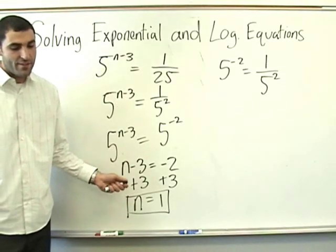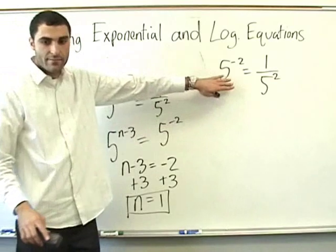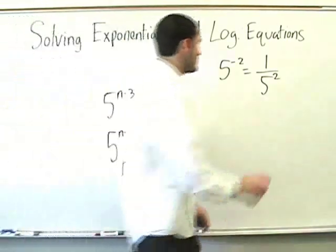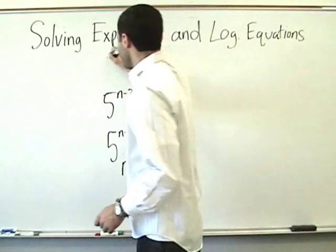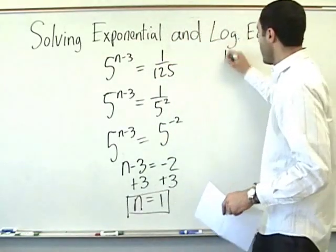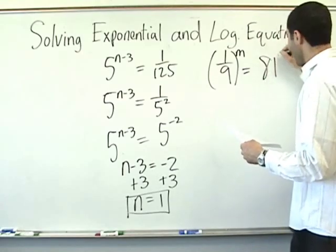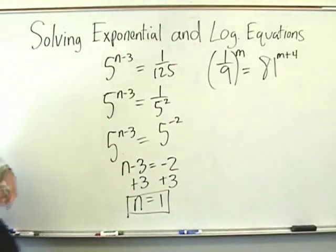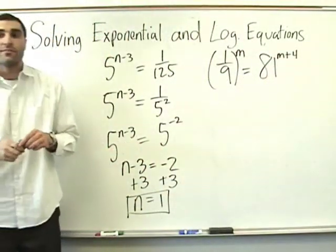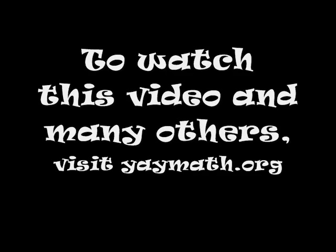Any questions on this? Alright. So you're going to try one. Let's put it back: 5 to the n minus 3 equals 1 over 125. And here's another one: 1 over 9 to the n equals 81 to the n equals 4. A little different, right? What do you think the base will be?